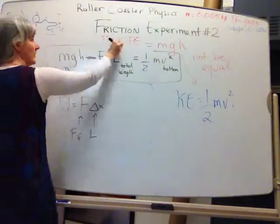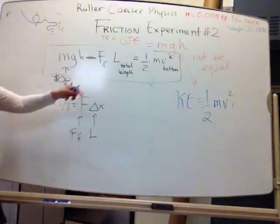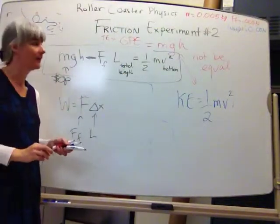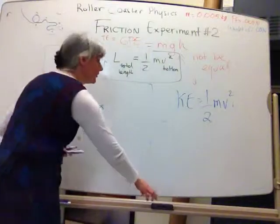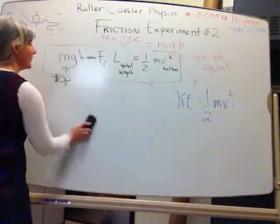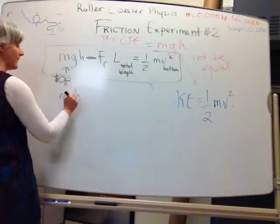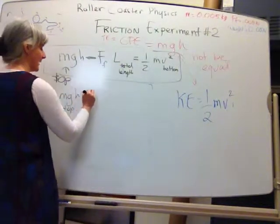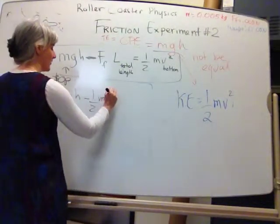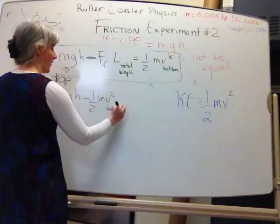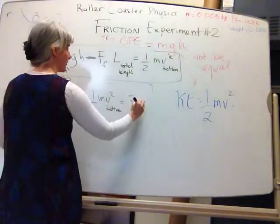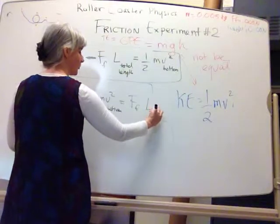So the mgh at the top minus the force of friction times the total length of the track is equal to the kinetic energy at the bottom. So if we do this equation out, we're going to end up with the top GPE minus the bottom kinetic energy equals the force of friction times the length of the total track.